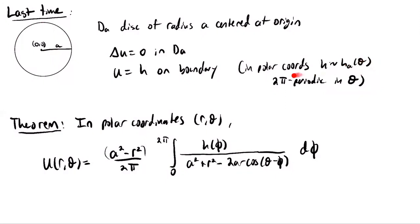In order for things to make sense, we want h to be 2-pi periodic. Under these assumptions, by using separation of variables in r and theta, we were able to obtain a Fourier series solution in terms of the parameters r and theta. Then, somewhat surprisingly, we were able to actually sum the Fourier series solution and ultimately end up with an integral formula.